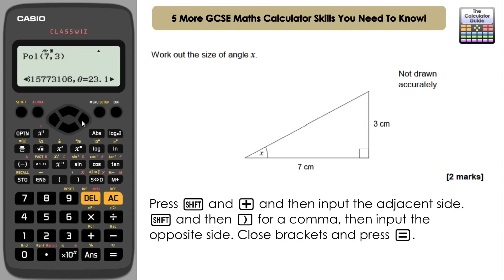And if we navigate right, we've got theta here. This is angle X, 23.198 and so on degrees. And incidentally, if we navigate left, this R here is actually the length of the hypotenuse. So if we needed to find that as well, it's the length of the hypotenuse, 7.62 to two decimal places.